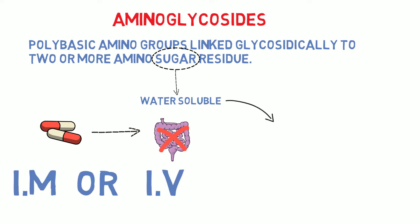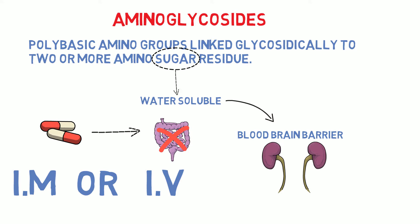Being water-soluble also makes aminoglycosides unable to cross the blood-brain barrier, and they are excreted through the urine in an unchanged form.